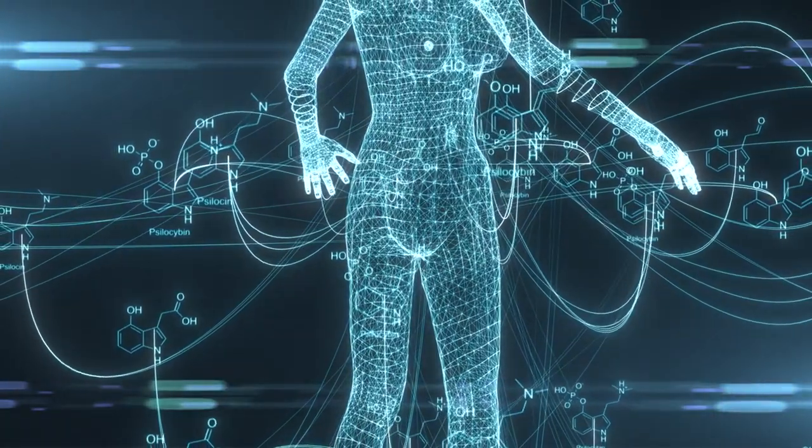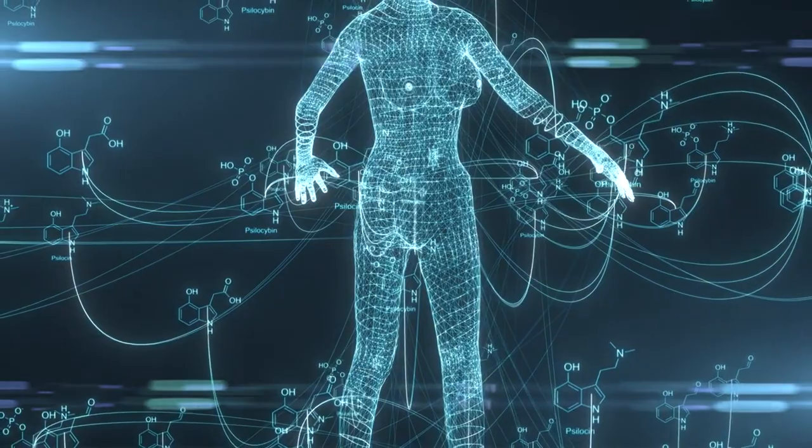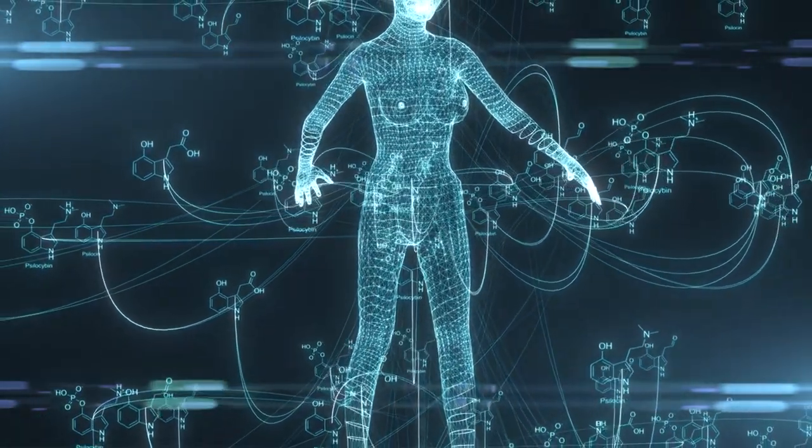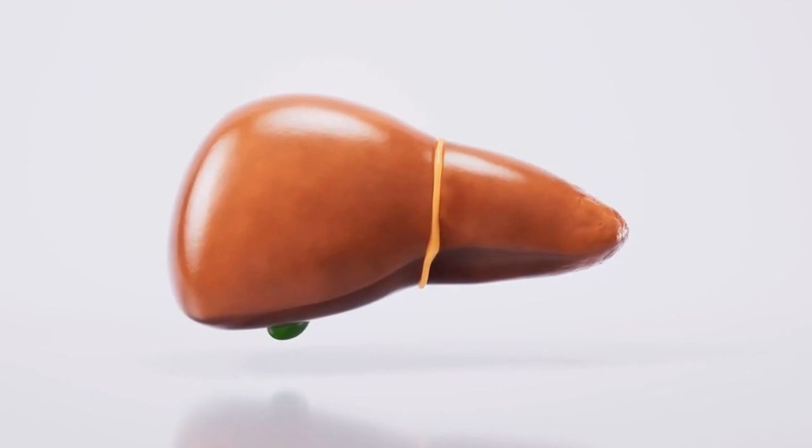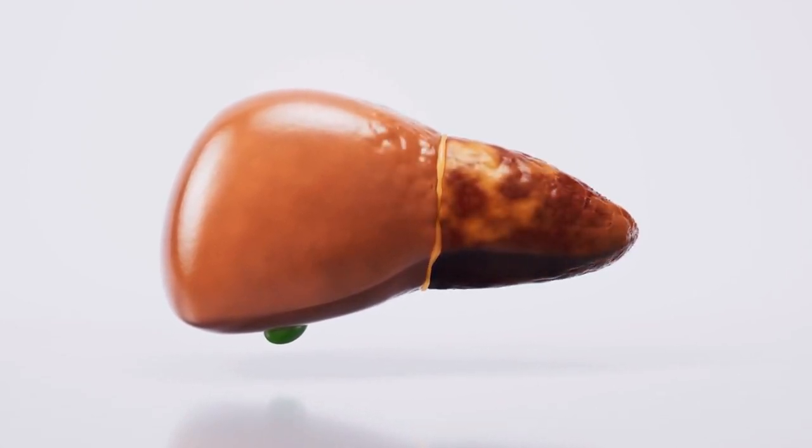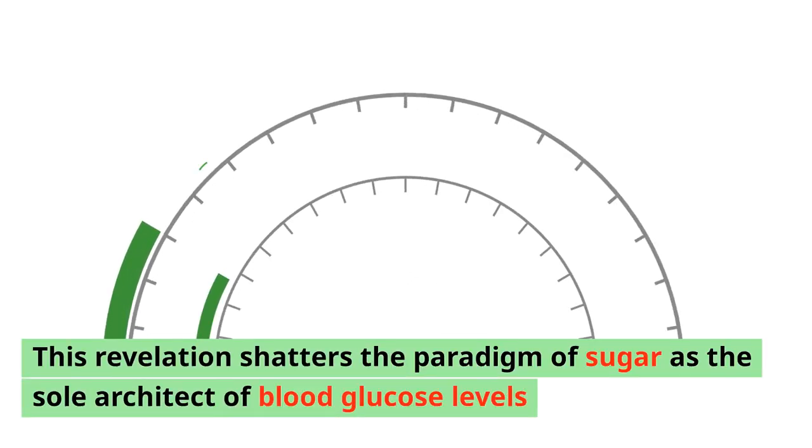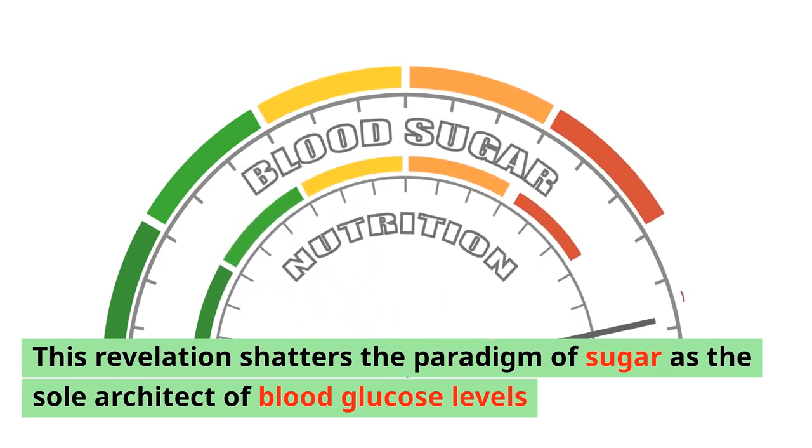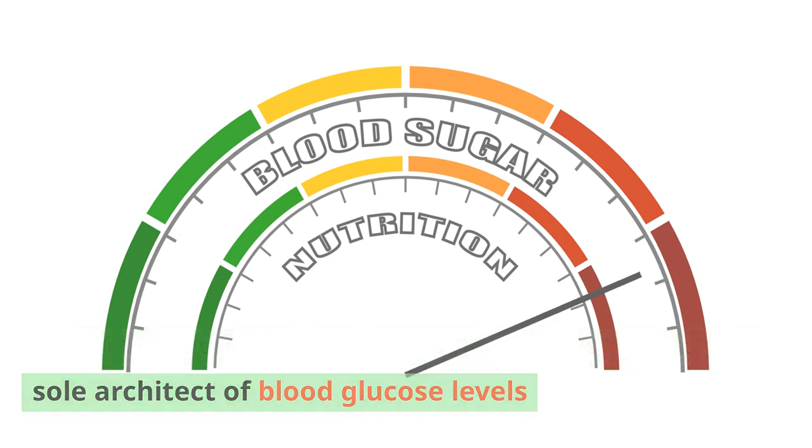While conventional wisdom dictates that dietary sugars fuel our energy needs, the clandestine orchestration of gluconeogenesis unveils a hidden realm where the liver and kidneys transform fat and protein reserves into glucose, perpetuating a delicate dance between energy production and metabolic balance. This revelation shatters the paradigm of sugar as the sole architect of blood glucose levels, illuminating the intricate interplay between dietary composition and physiological processes.